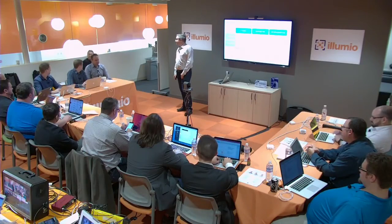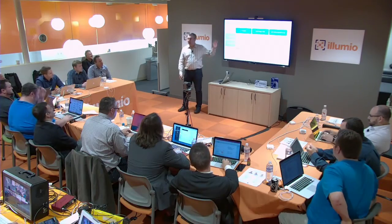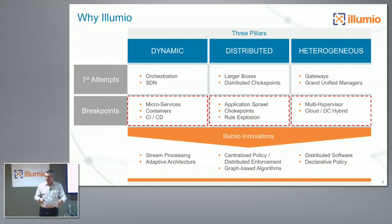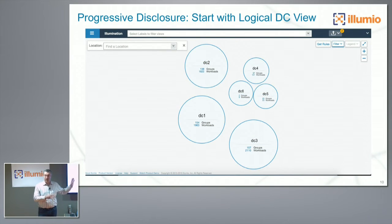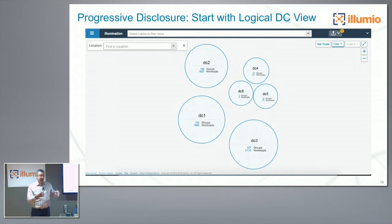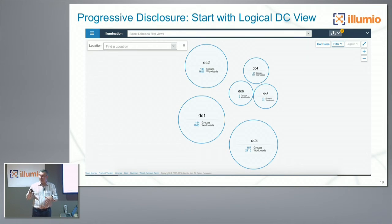93% of our deployments are brownfield data centers. We appear like a cloud security system but almost all of our business is in brownfield data centers. One critical feature that underpins all of this is visibility — being able to understand what's going on. This is where the brownfield use case comes in. I'll show a few slides — and we'll show this live in a few minutes — starting with an illumination graph we did on a real customer. We've collected metadata with no policy enforcement involved, which is really about understanding what's going on before you can do enforcement.